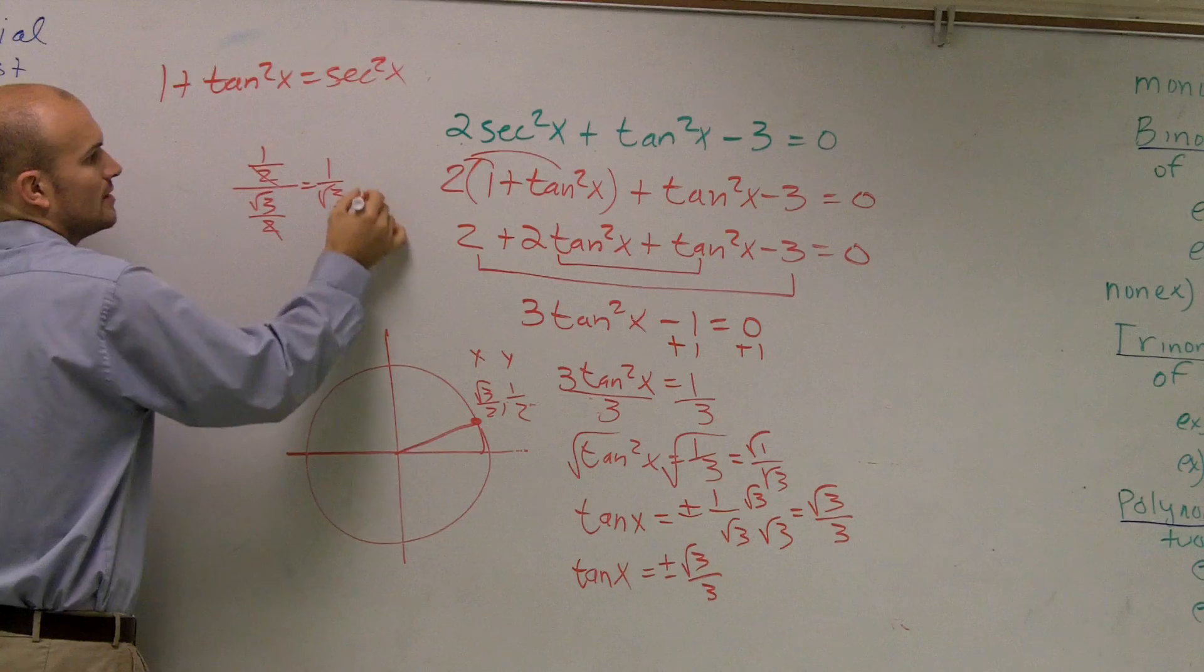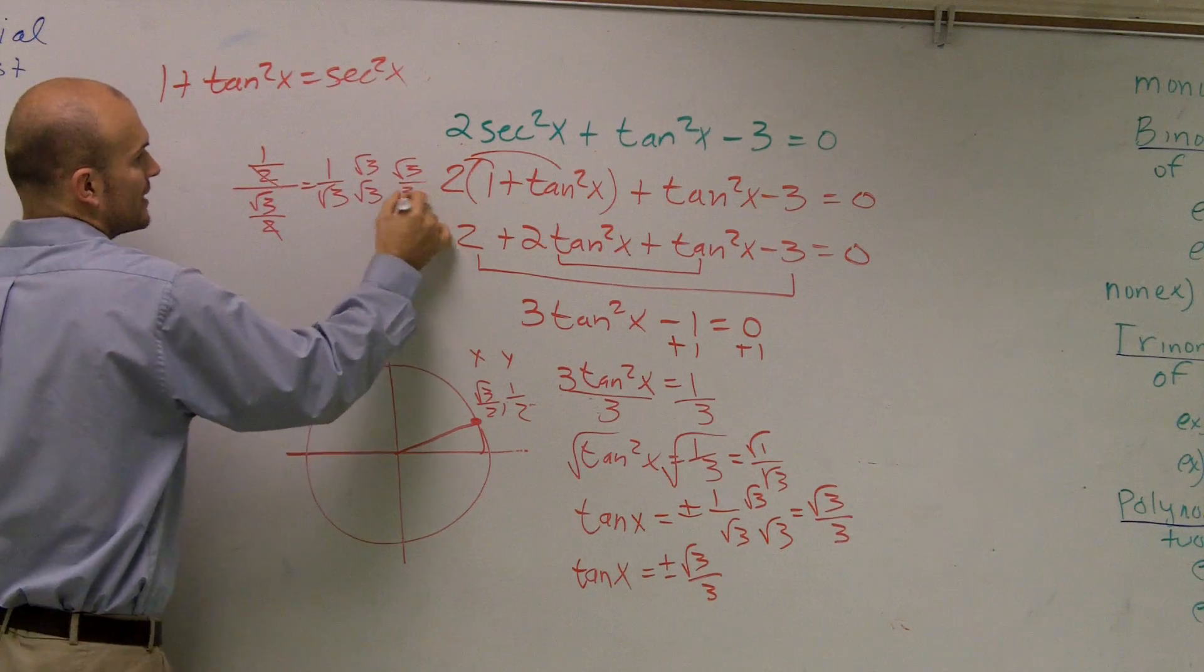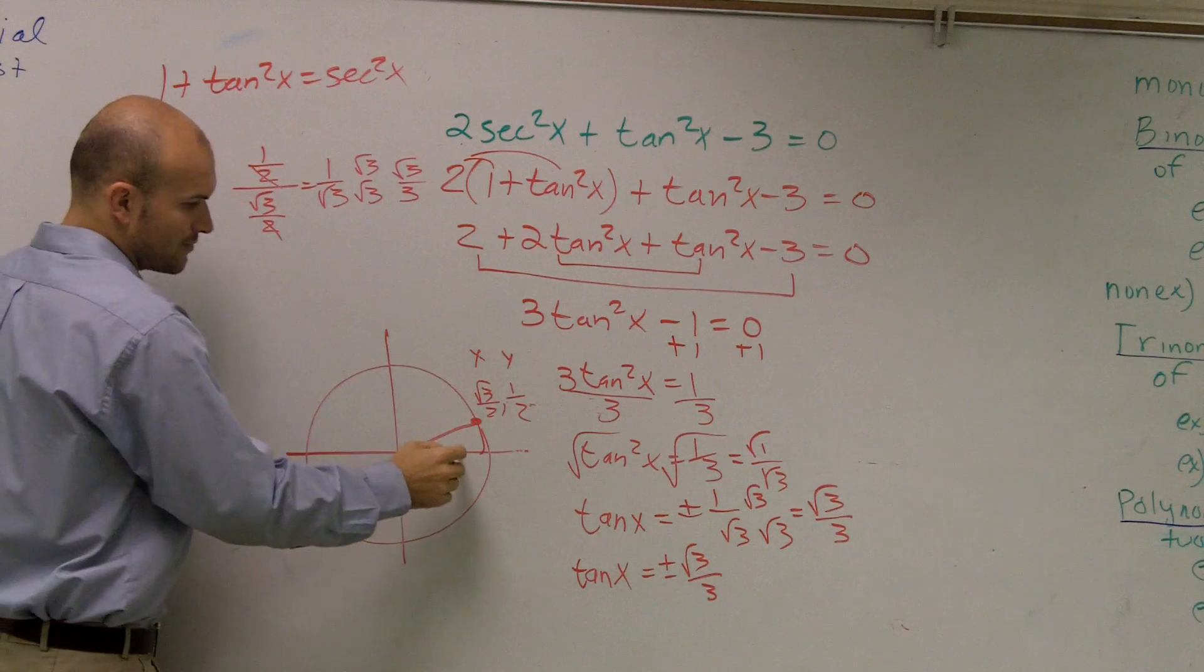I would equal 1 over radical 3. Simplify that again. Radical 3 over 3. So yes, you're right. Pi over 6 works.